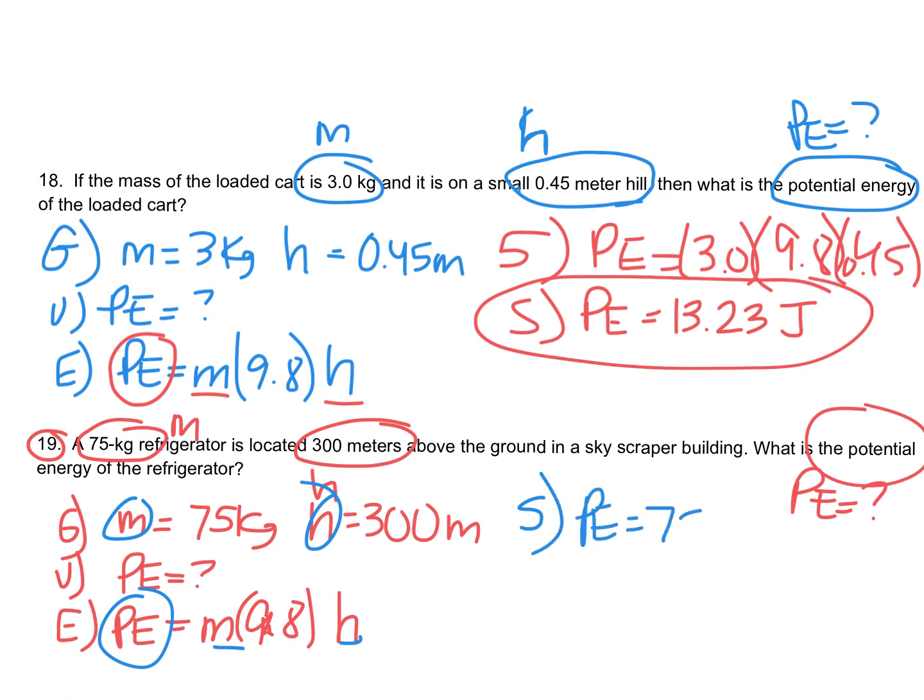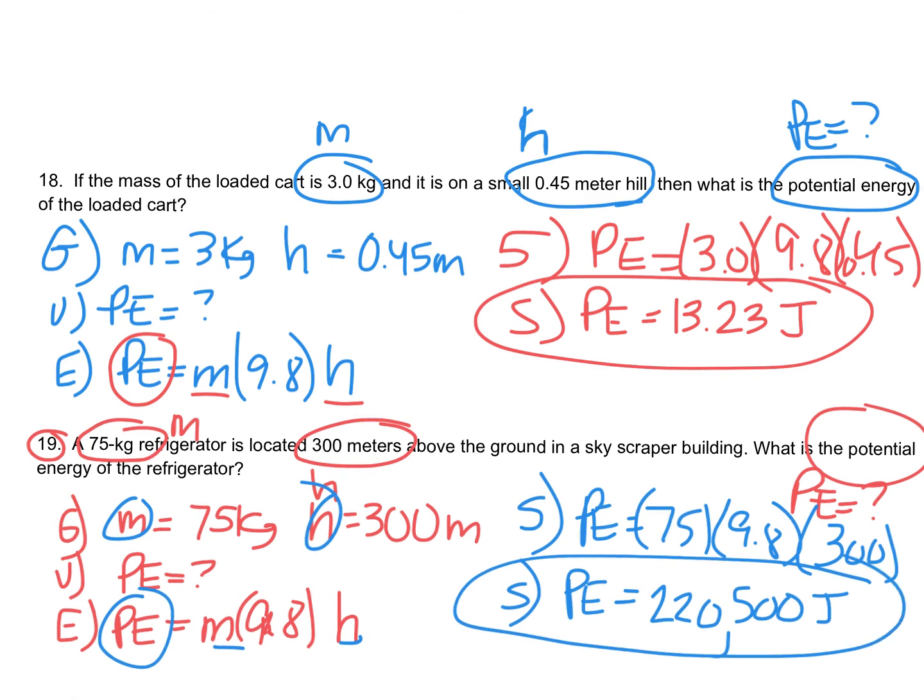So S is for substitute. Let's plug in our numbers. 75 for mass, 9.8 for gravity, and 300 meters for the height. All you have to do is multiply all three of those together for our S solve. And what do we end up getting? A much bigger number, 220,500 joules of energy, right? If that refrigerator fell off the floor of the skyscraper, there'd be a lot of energy as it plunges to the ground, right? So this is a lot of potential energy stored up. And if it fell out of the building, it could do a lot of damage and transfer that energy into something super dangerous.